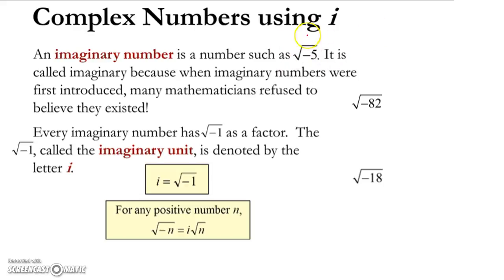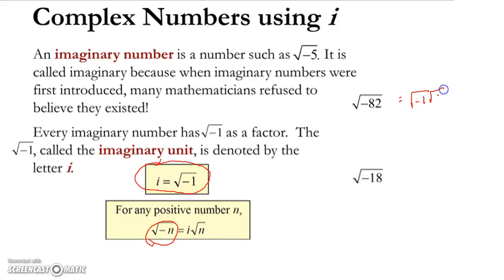On occasion we will have the square root of a negative number. This is where we introduce the concept of the imaginary unit i, where i equals the square root of negative 1. For any number n, the square root of any negative number n is going to be i times the square root of n, because i is defined as the square root of negative 1 — you're factoring out a square root of negative 1 and calling it i. For example, the square root of minus 82 is really the square root of minus 1 times the square root of 82, which equals i times the square root of 82. The factors of 82 don't include any perfect squares, so this is as simplified as it gets.